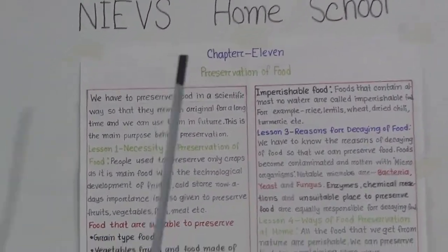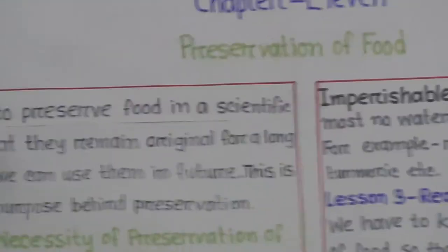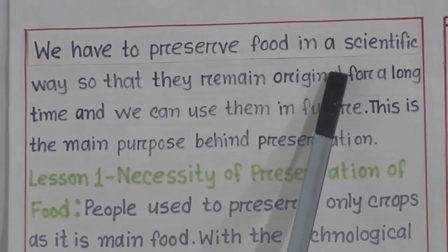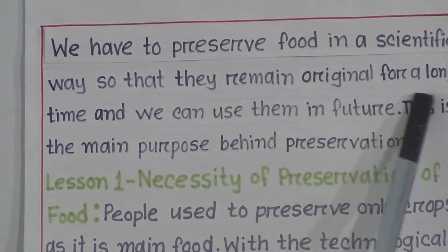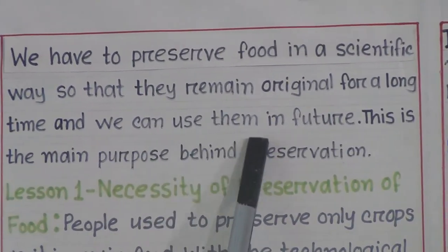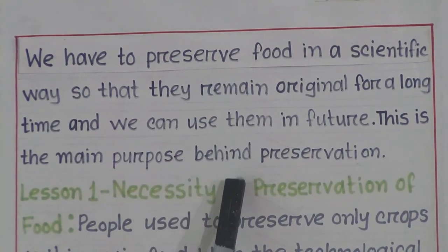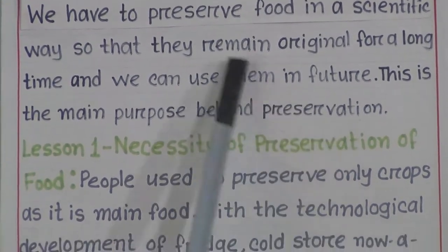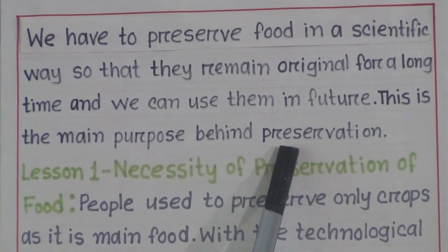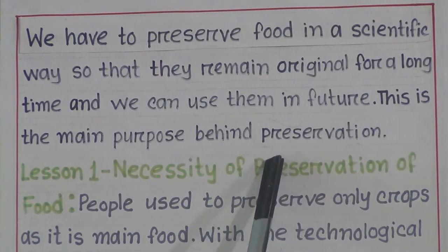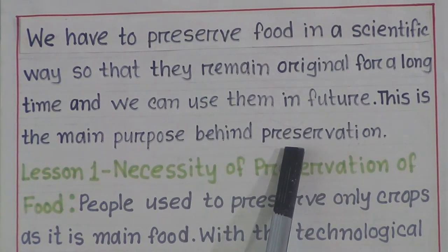Chapter 11 is named 'Preservation of Food.' We have to preserve food in a scientific way so that it remains original for a long time and we can use it in the future. This is the main purpose behind preservation.